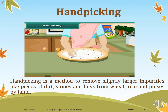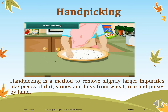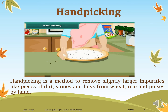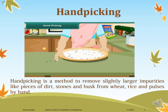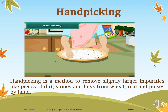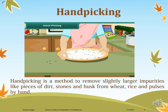Starting with hand picking. Hand picking is a method to remove slightly larger impurities like pieces of dirt, stone and husk from wheat, rice and pulses by hand. It is majorly a manual method used to separate or clean any substance. This process is used in the cleaning of grains like wheat, rice and pulses, where the impurities are larger in size and can easily be picked up by hand.